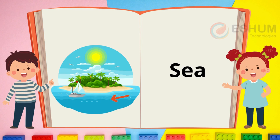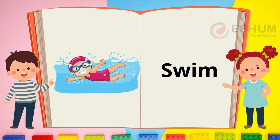Sea. The water that is around the island is the sea. There are trees on the island and waves in the sea. Many things live in the sea. What sea animal do you like? Swim. In the picture the boy is moving his body through the water — he swims. He wears a red swimming cap.